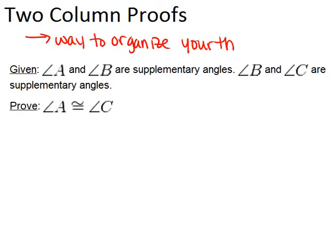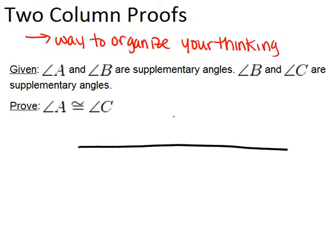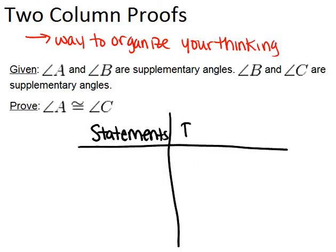Two-column proofs are called two-column proofs because they're organized into two columns. The two columns are called your statements and your reasons. We're going to start by organizing our columns — statements on the left and reasons on the right. You always have to give a reason for everything that you say.